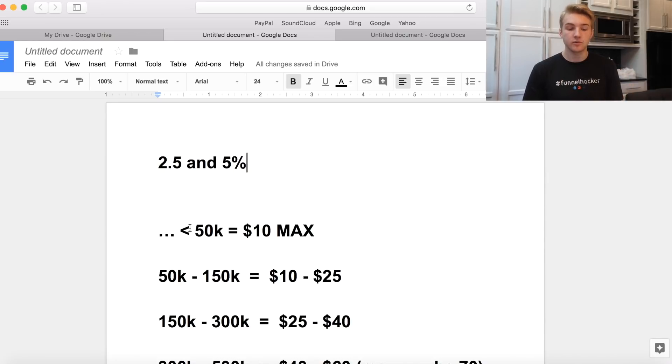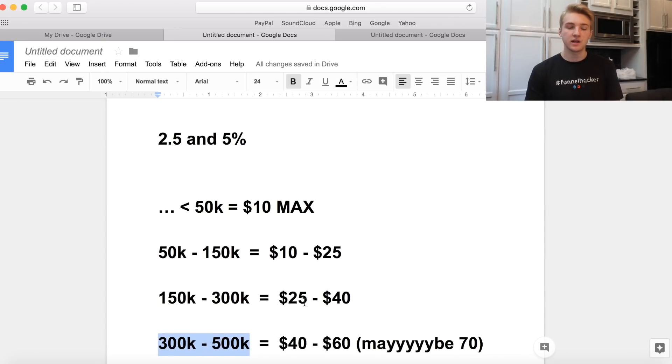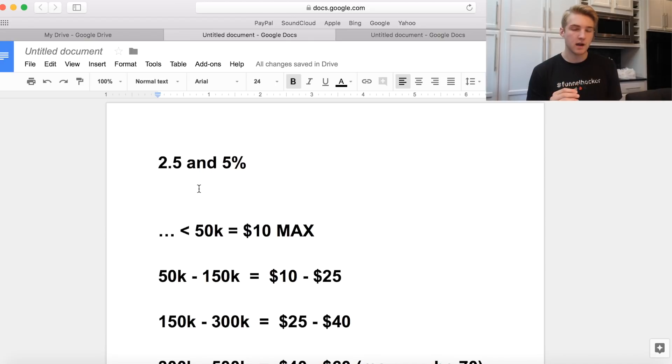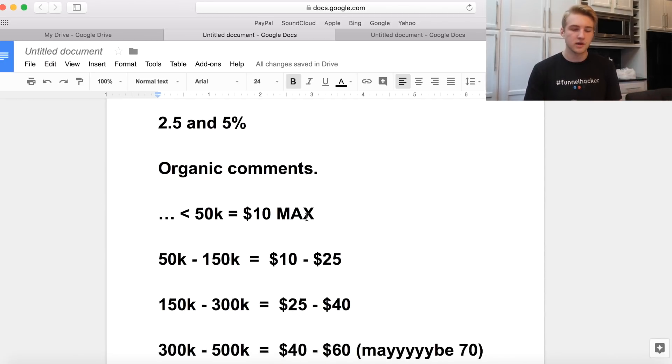The smaller the page, typically the higher the engagement rate they're going to have. You can find ones with 300 to 500k followers with above 5% engagement. Make sure it's organic comments. Go through their comments. If it's a ton of similar pages like other sports pages around a similar following size, that means they're in engagement groups and you don't want that.